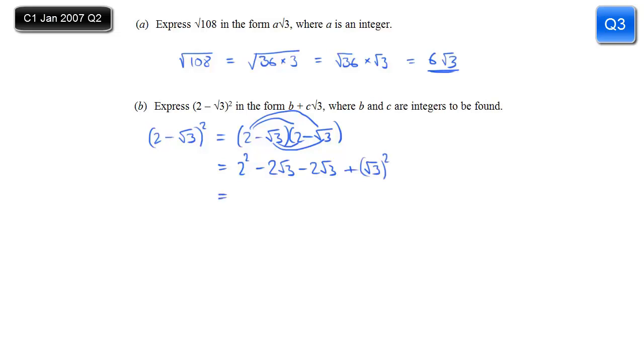Now, you could write that straight away as 3, but if you're not sure, write it as root 3 squared. So tidying up, 2 squared is 4. Combine those two middle terms to give you minus 4 root 3, and root 3 squared is of course 3. So the 4 and the 3 make 7. 7 minus 4 root 3, and that's my answer.